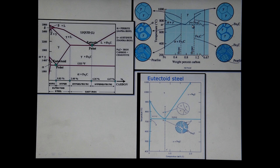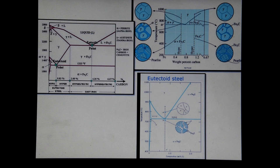Looking at the hypereutectoid region, the microstructure evolution is quite similar. You start with gamma as a single-phase solid solution. Once you cool down, you move into the gamma plus Fe3C region, where cementite begins forming on the grain boundaries. Once it cools further, you then have alternating layers of alpha and cementite, which also forms pearlite.